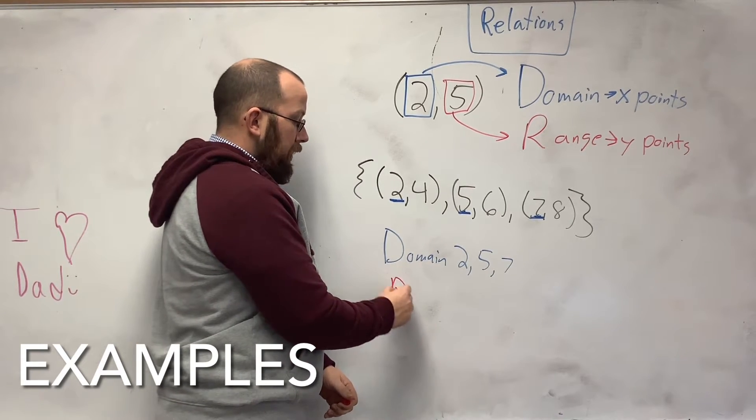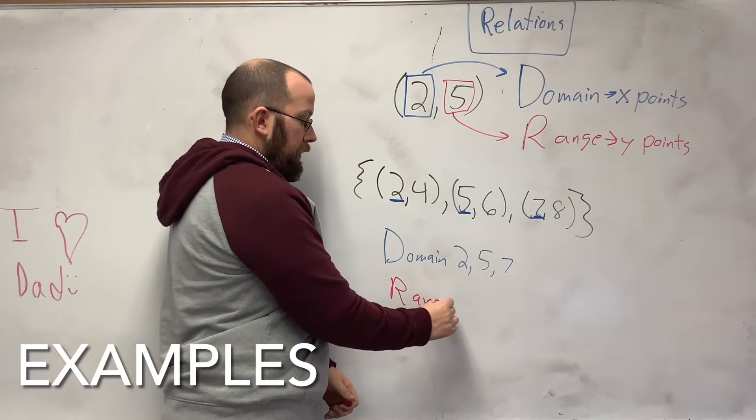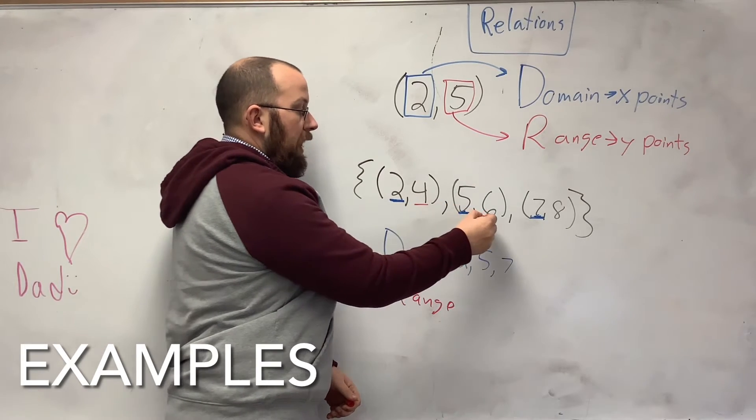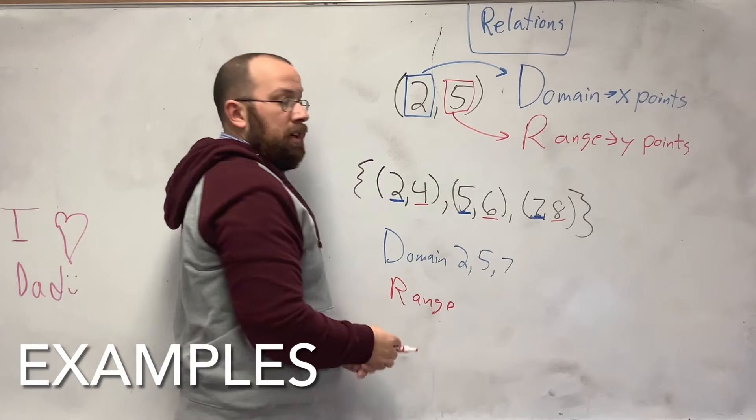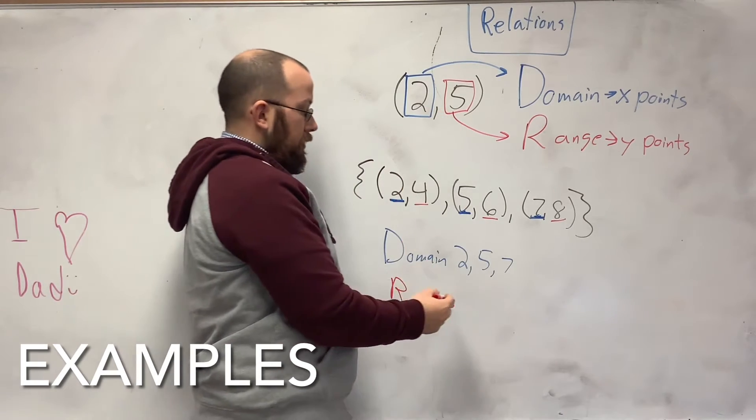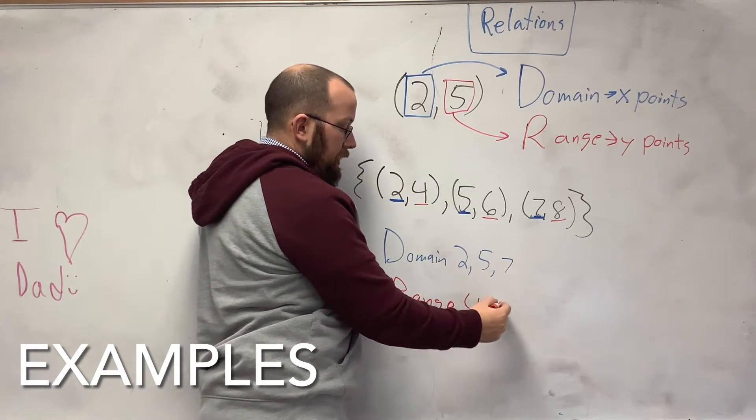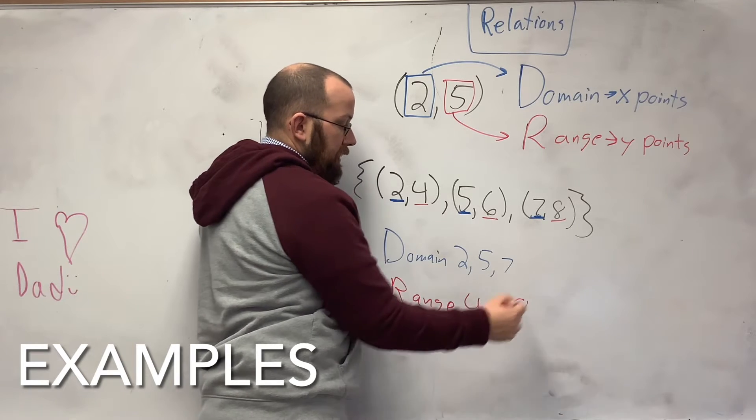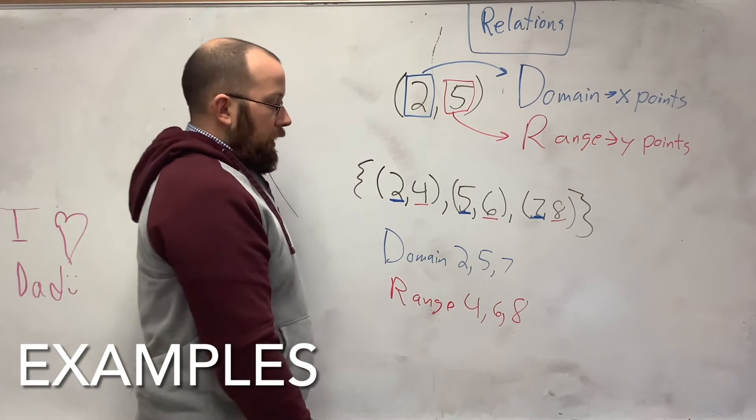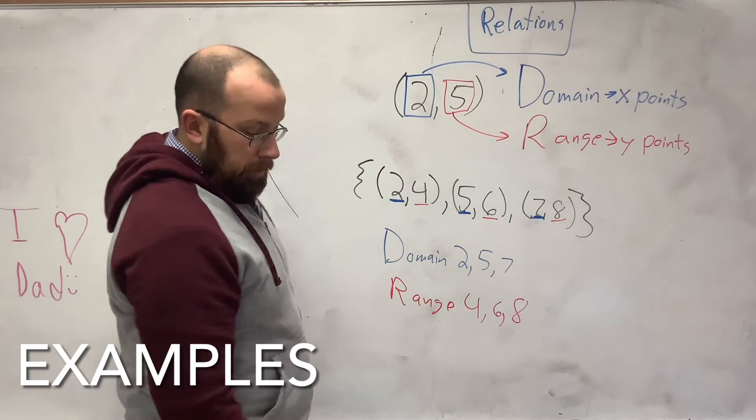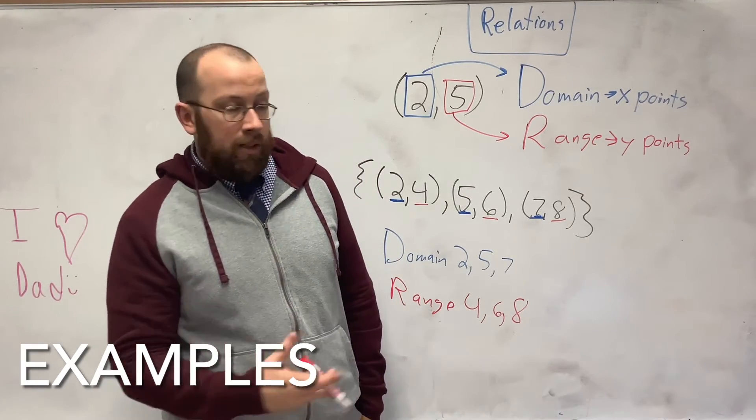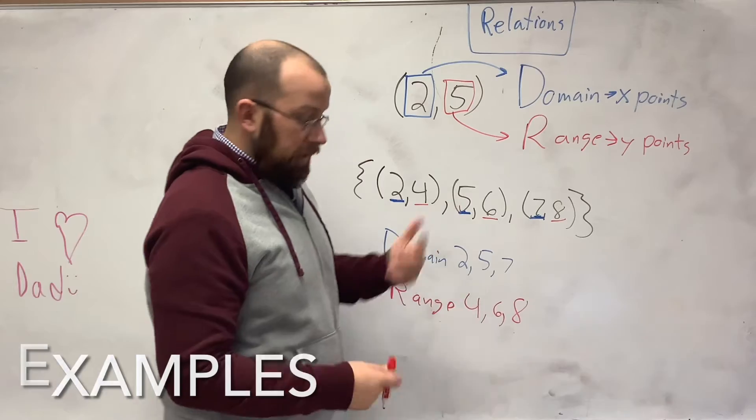Now, what if I want to know what the range is? Well, it's the y values, or the second point of each point. So then it's just {4, 6, and 8}. And that is my domain and range for this particular set of relations.